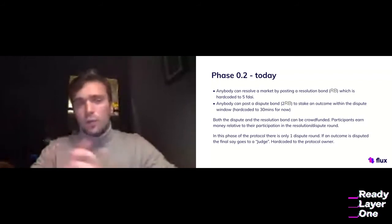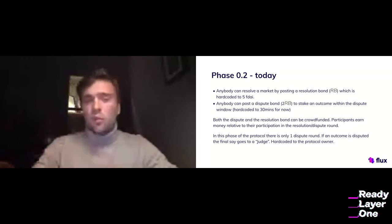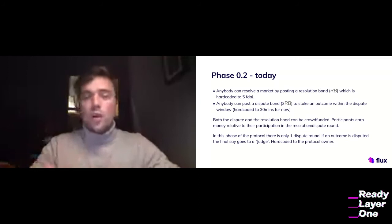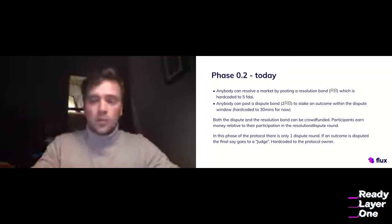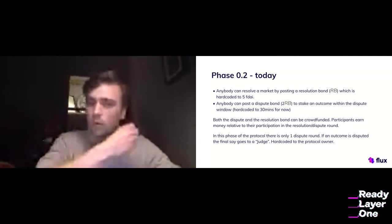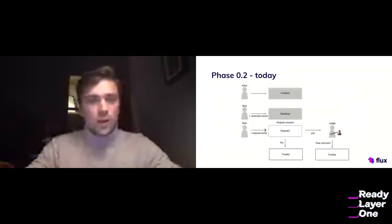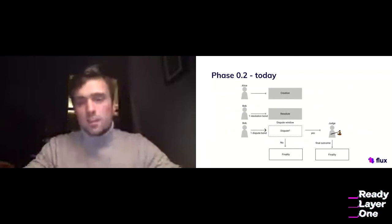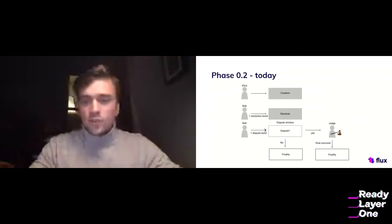In this version of the protocol, there's only one dispute round. If the outcome is disputed, the case goes to a judge, which is hardcoded to be the protocol owner, and the judge has final say on the outcome. So Alice can create a market for free because there's no monetary value yet. Then Bob can stake a little bit of money on a resolution. Anybody can come in and dispute it. If it is disputed, it goes to a judge who has the final outcome. If it's not disputed, it reaches finality.